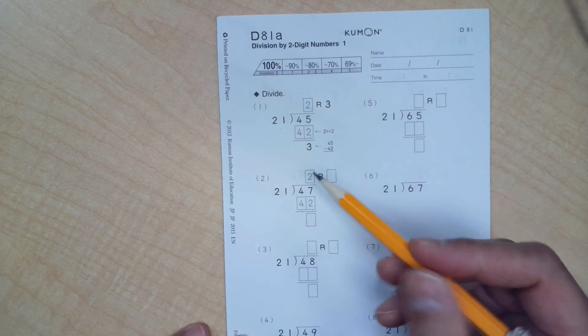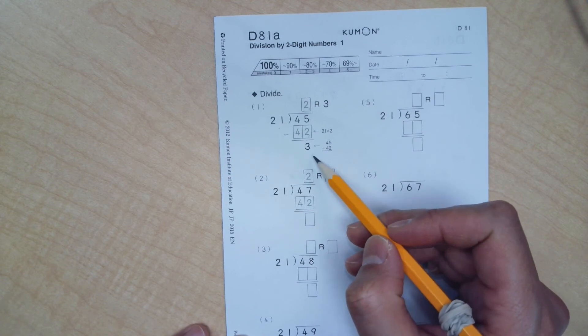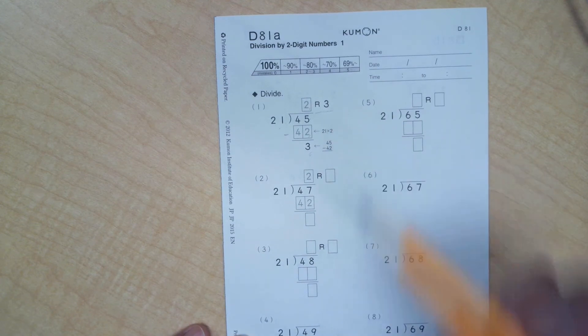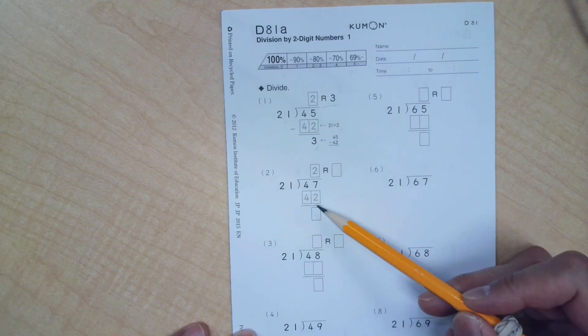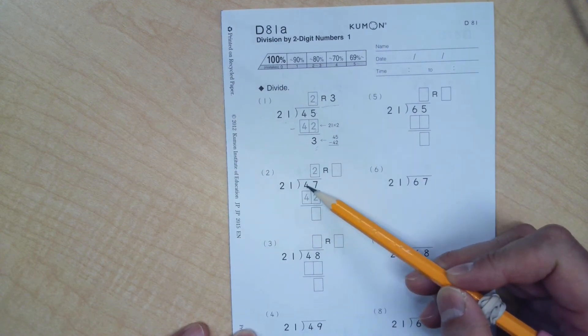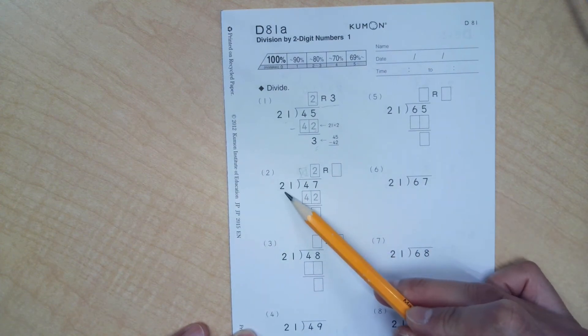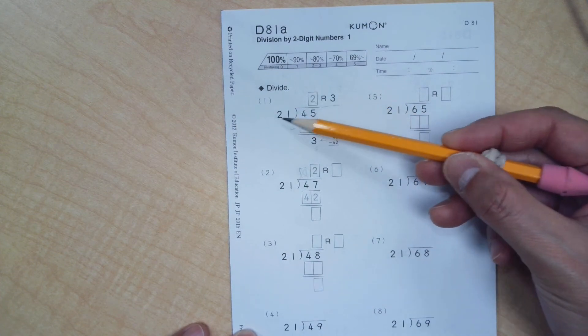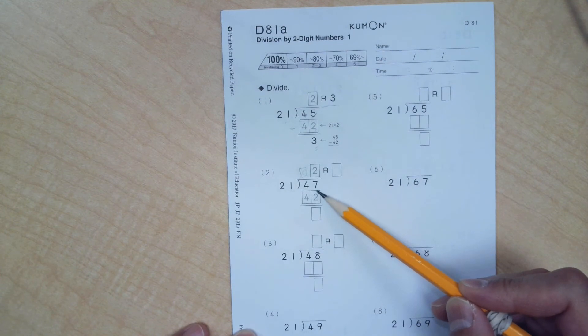Then you will write 42 here. And then the next step is to subtract 42 from 45. So 45 minus 42 is 3. And 3 cannot be divided any further by 21. So at this point, we're going to use this 3 as our remainder. Second problem here, once again, the example here was nice enough to show you that 21 cannot possibly go into a 4. So we're going to skip this space. And ask yourself, how many times can 21 go into 47? In other words, what is 47 divided by 21? And we know from up here that 21 times 2 was 42.